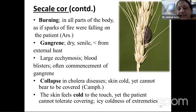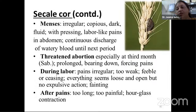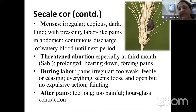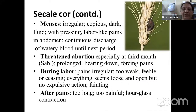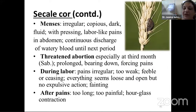Menses: irregular in nature, copious dark fluid with pressing labour-like pain in the abdomen — number one for dysmenorrhea. Continuous discharge of watery blood until next period — menorrhagia and metrorrhagia. Indicated for threatened abortion especially at third month, like Sabina. Prolonged bearing down causing pain. Parts affected remain as if wide open. During labor: pains irregular, too weak, feeble or ceasing; everything loose and open but no expulsive action, followed by fainting. After pains too long, too painful — hourglass contractions. Suppression of milk in thin, scrawny, exhausted, anemic persons. Pulse small, rapid, contracted and often intermittent. Secale cornutum also decreases pancreatic juice by raising blood pressure — important therapeutically.